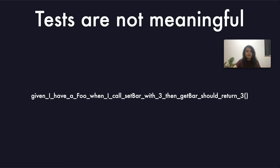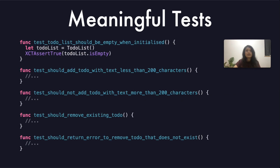Let's look at an example of tests that are not meaningful. Given I have a Foo, when I call set bar with three, then get bar should return three. When these kinds of tests fail, it is hard to know what went wrong and maintenance is really difficult. Now let's see how meaningful tests look. This is the test suite associated with the to-do list class. Test: to-do list should be empty when initialized. Test: should add to-do with text less than 200 characters. Test: should not add to-do with text more than 200 characters. These sorts of tests are really easy to understand, and if they fail, you know exactly what has gone wrong.